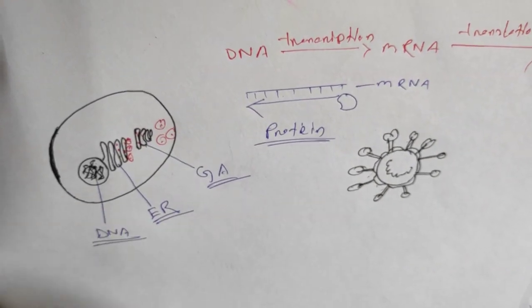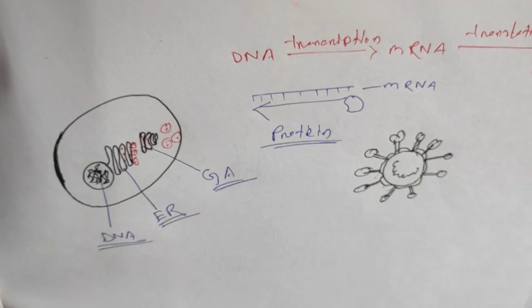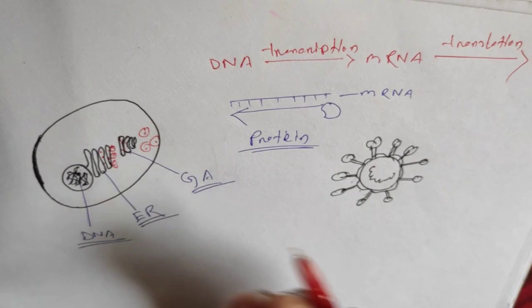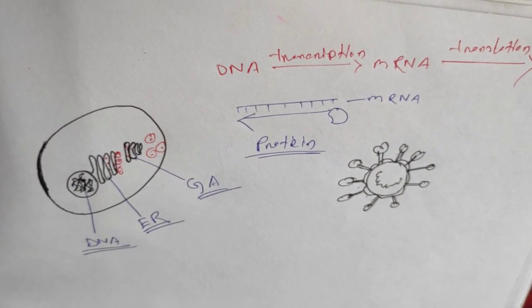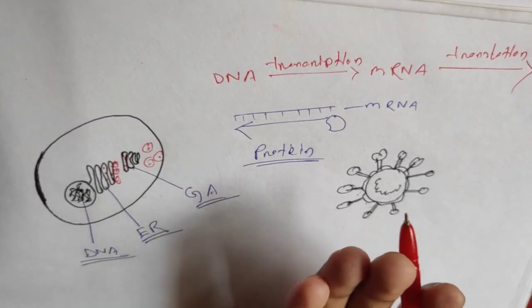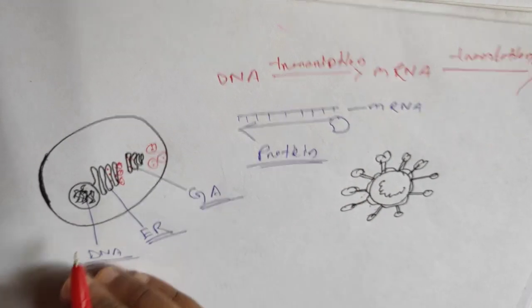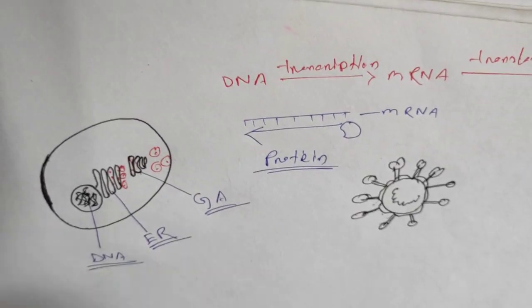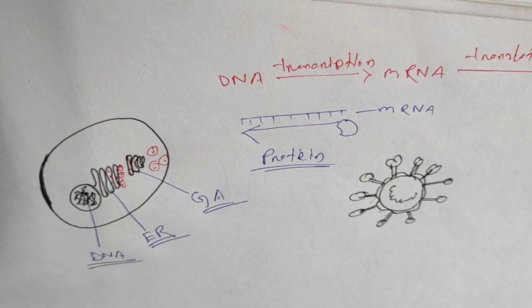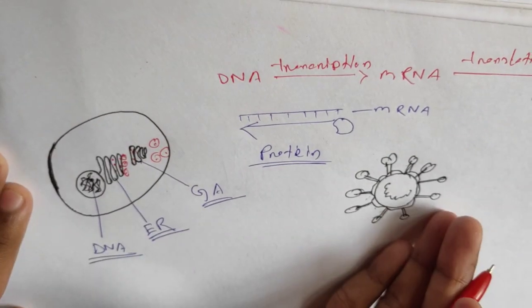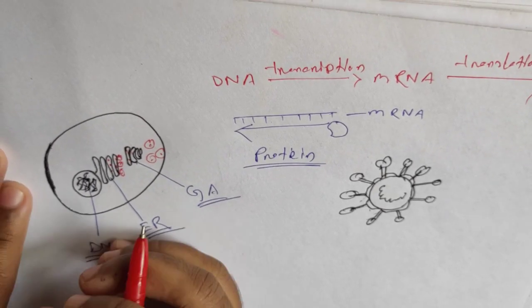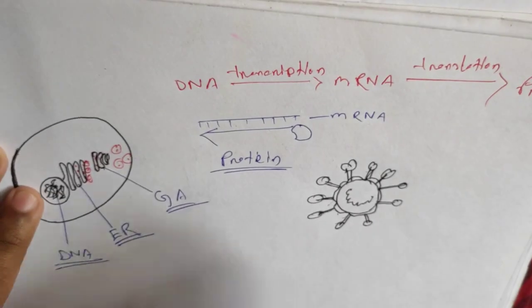Why are we talking so much about protein here? Because protein is very important — all cells are producing protein all the time. Protein is also needed for cell division, and without cell division we cannot grow. This is the basic healthy function of a cell. So what happens when this cell is infected with coronavirus?